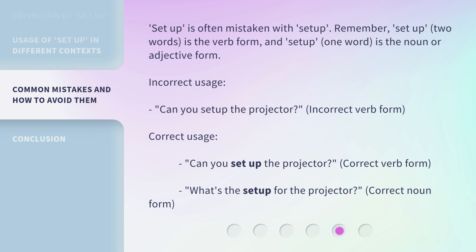'Set up' is often mistaken with 'setup.' Remember, 'set up' — two words — is the verb form, and 'setup' — one word — is the noun or adjective form. Incorrect usage: 'Can you setup the projector?' — incorrect verb form. Correct usage: 'Can you set up the projector?' — correct verb form. 'What's the setup for the projector?' — correct noun form.